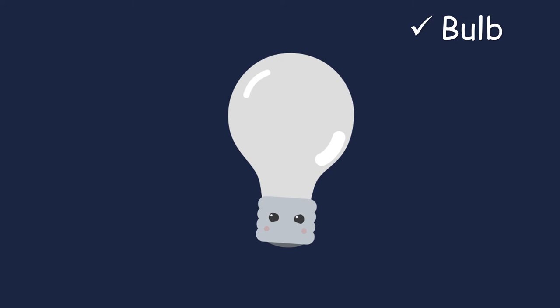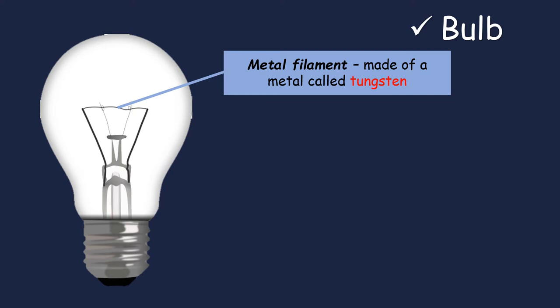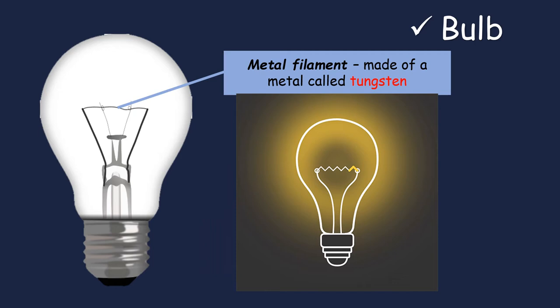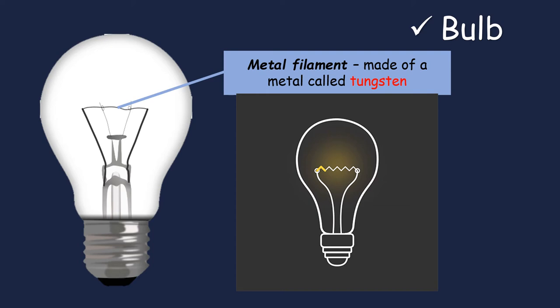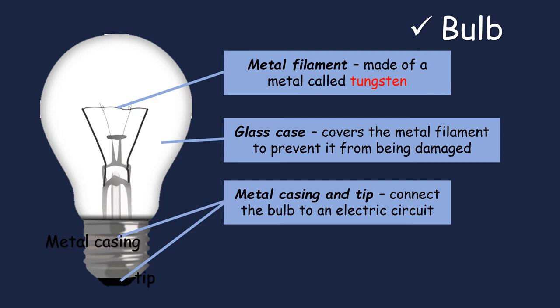By the way, class, a bulb is made up of four parts. The first one is the metal filament. It is usually made of metal called tungsten. When an electric current flows through the metal filament, it glows and gives up light and heat. The second part is the glass case. It covers the metal filament to prevent it from being damaged. And the last two parts are the metal casing and tip. They connect the bulb to an electric circuit.